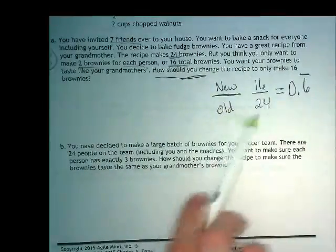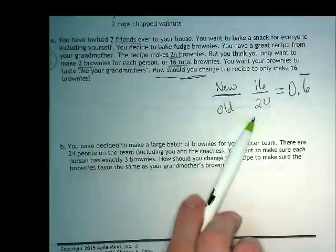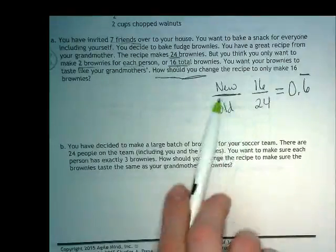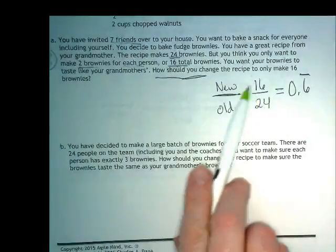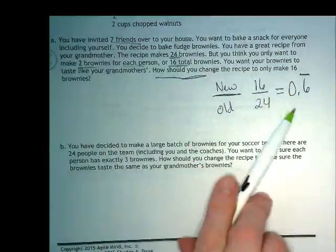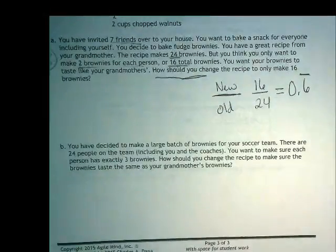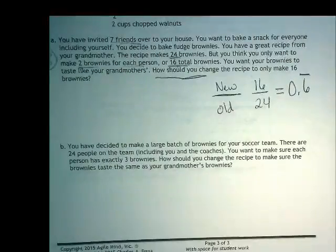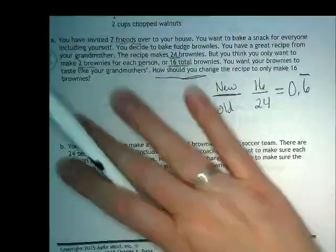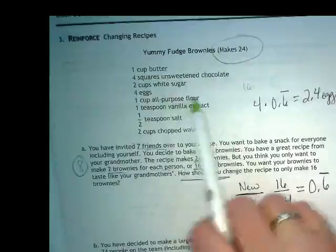Do you see where I got these numbers from in the problem? The original recipe had 24 brownies being made, right? The recipe this person wanted to make was only going to have how many? 16. And 16 divided by 24 gives us 0.6 and it goes on and on and on. Who's cooked before? Who's broken eggs and tried to use them in recipes before? Is it easy to use half an egg? Yeah.